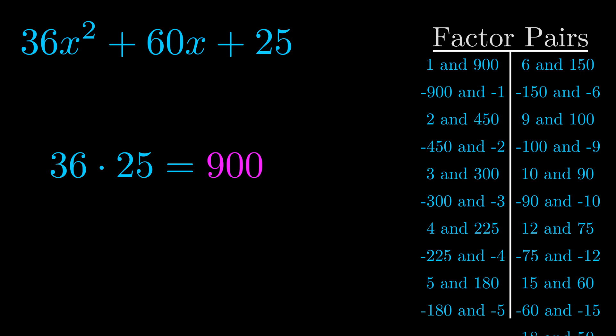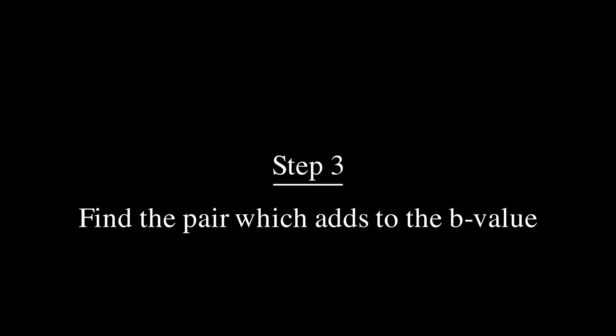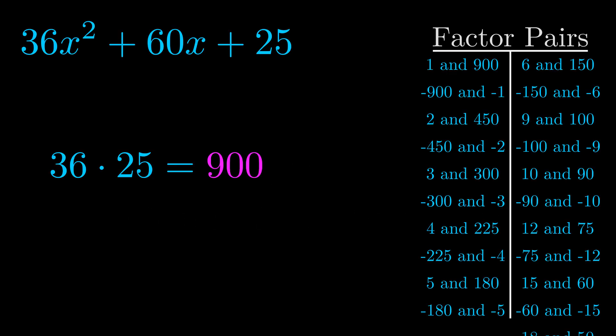Now once you have these factor pairs, the goal is to find which of these pairs adds to the b value. The b value is the coefficient on the x term. That's the middle term, the one that we haven't done anything with yet. And really this is the only factor pair that we need.